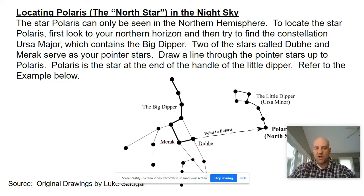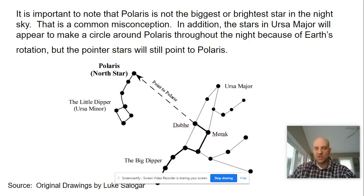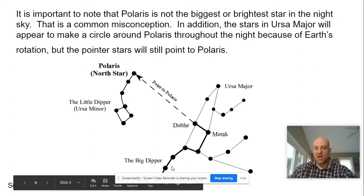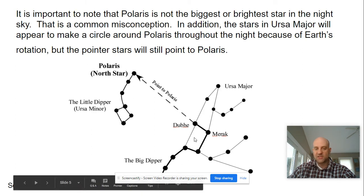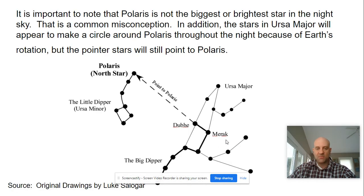One of the tricky parts about locating Polaris is that the star Polaris will appear to stay in the same position. However, the other stars will appear to move around Polaris. At a different time of night, the Pointer Stars might be located over here. No problem — draw a line through the Pointer Stars and they will still guide you to the location of Polaris.